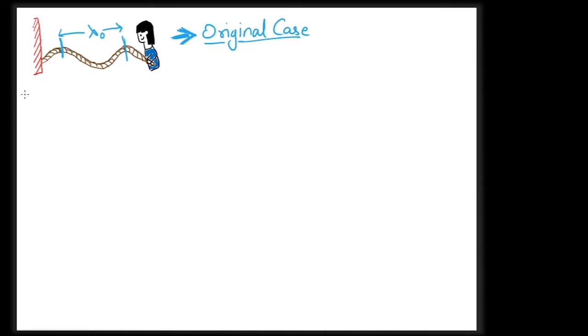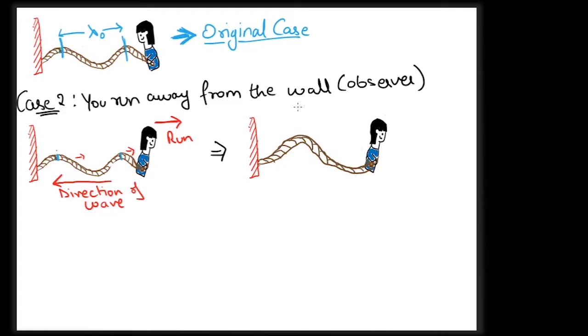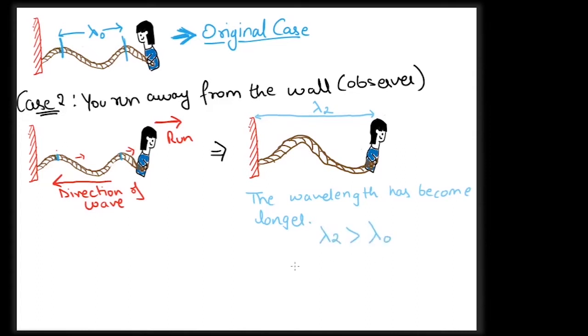In the second case now, imagine that you are running away from the observer or the wall. In this case, you will be running opposite to the direction of the wave going towards the observer and will actually pull the rope along as you run. This will have the effect that the distance between the troughs and the crests will get longer because of the pull. The observer will thus receive waves with longer wavelengths and hence shorter frequencies due to the motion of the source, i.e. you.